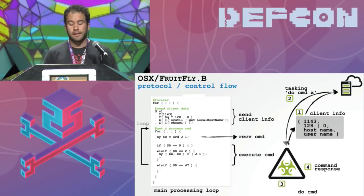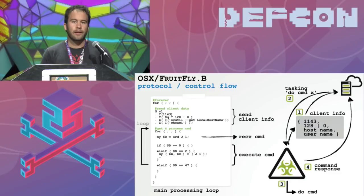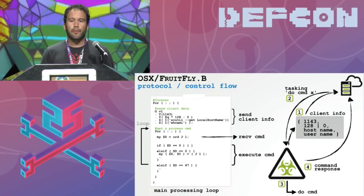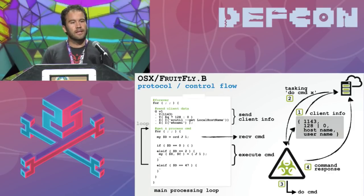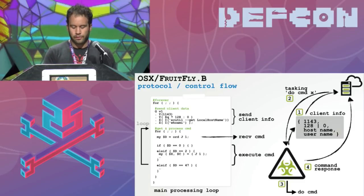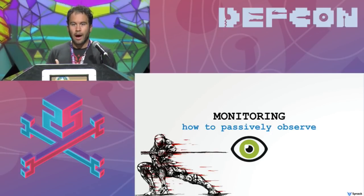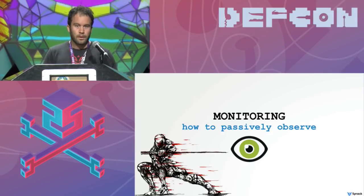Finally we get to the main processing loop, which does two things. It checks in with the command and control server, sending information like the host name and user name, and then it invokes the J subroutine to receive one byte from the C2 server, which it processes in a massive else-if loop. It's basically just receiving a numeric command from the C2 server, processing it, and then returning the response. So now we know the C2 server addresses, that the malware will connect to whatever you specify on the command line, and we understand the basic protocol.